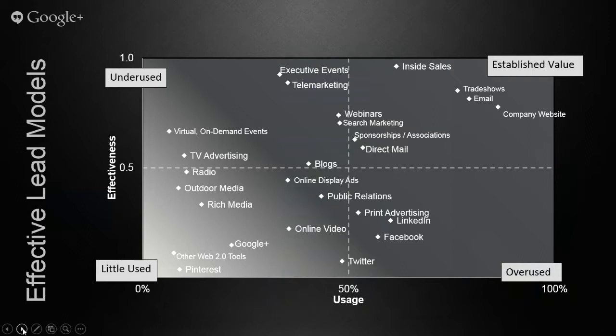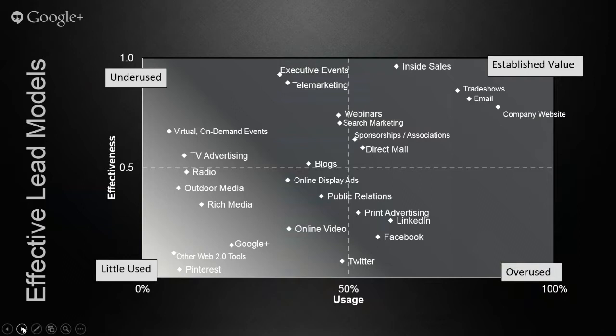With this quadrant model we showed where they're being effective. The top right core quadrant is where you want to focus. Trade shows, email, and company website are definitely the mainstay. Inside sales is very strong for value and effectiveness, but not being used quite as much. The thing I want to talk about is social media. In the bottom right quadrant you'll see LinkedIn, Facebook, and Twitter. Those are being used a ton, but they're not being used as effectively.